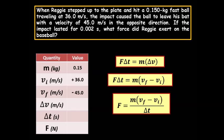If the original direction is positive, it would be positive 36 meters per second. He hits it in the opposite direction, so it will be negative 45 meters per second.